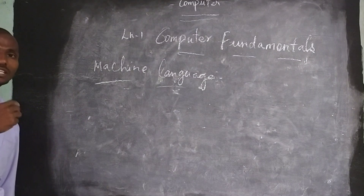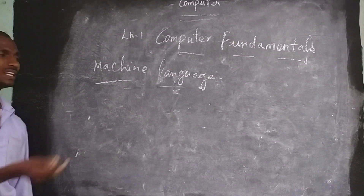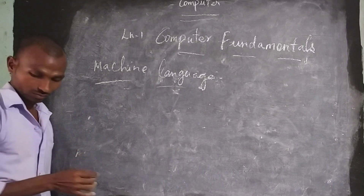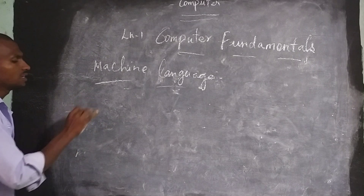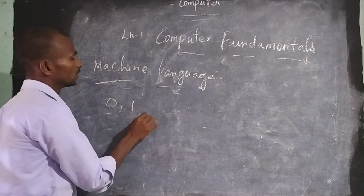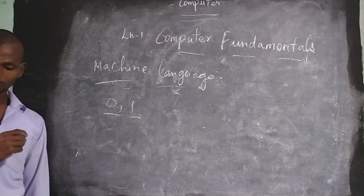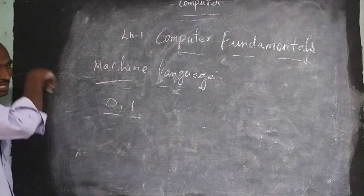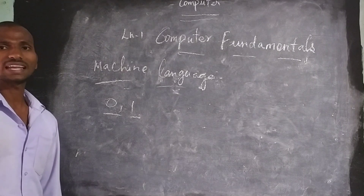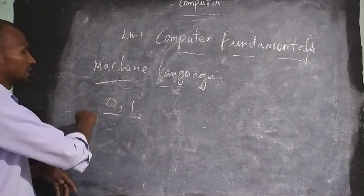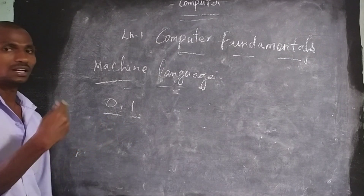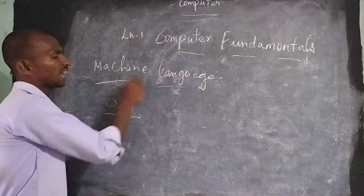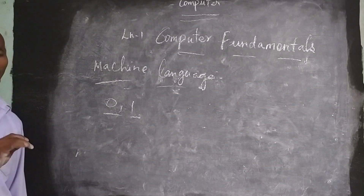Machine language is a language easily understood by the computer. It uses binary values — the programming codes are done using only 0s and 1s. Machine language is the lowest form of computer language which the computer can understand easily, and it is also called binary language.